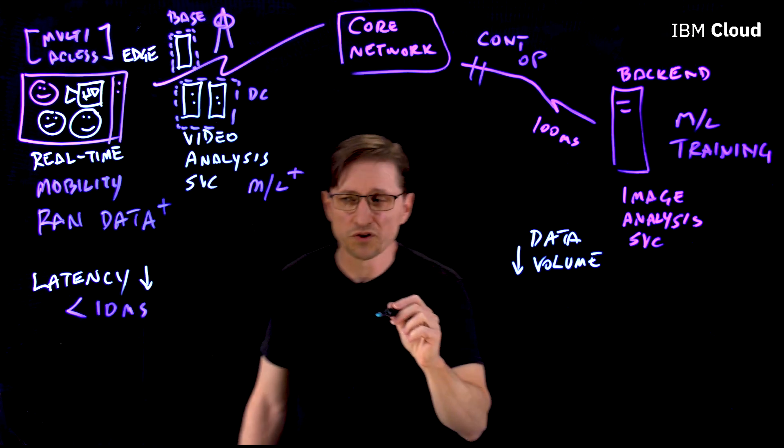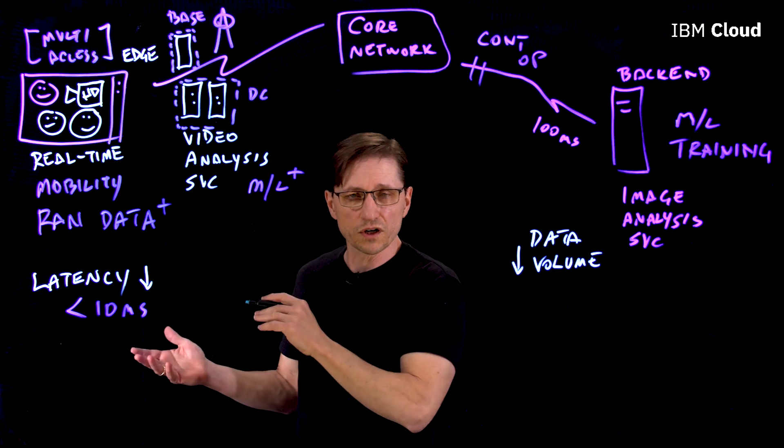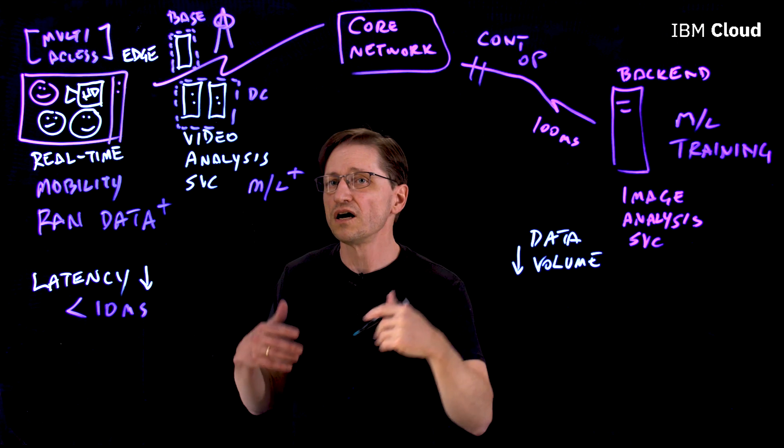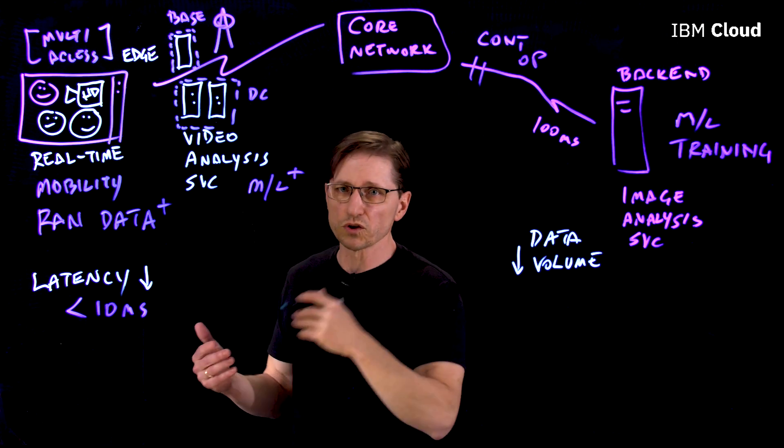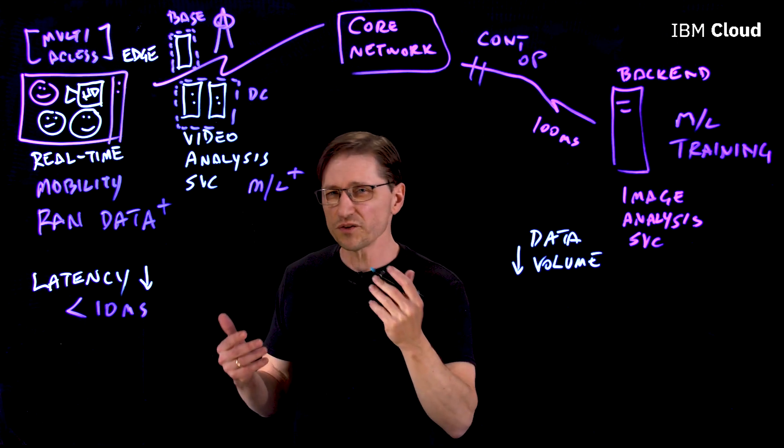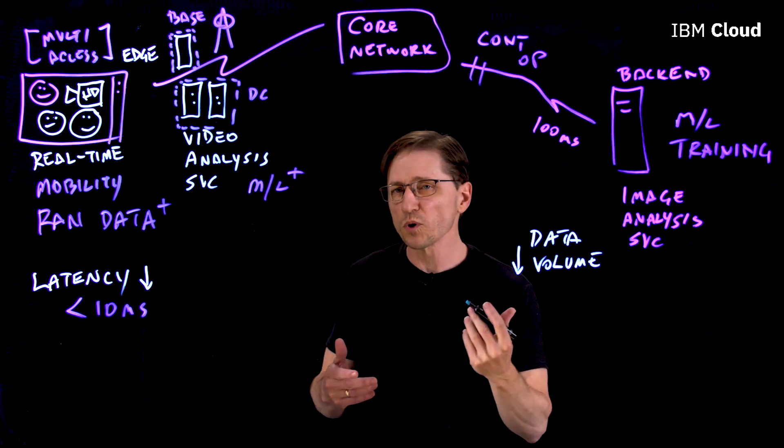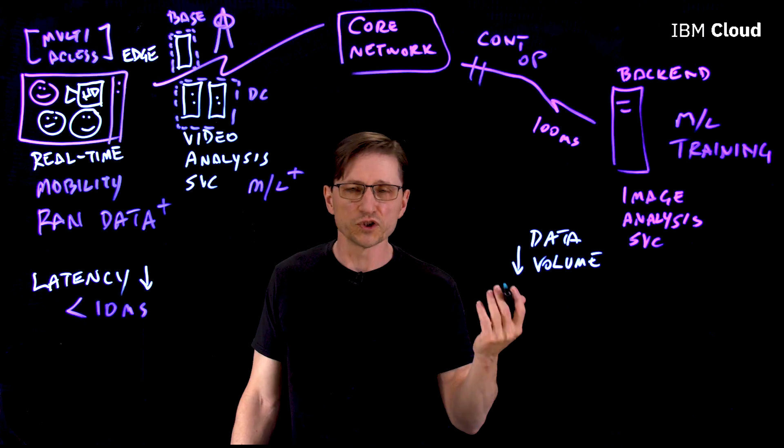For example, the radio access network would know where the location of the users are and could potentially predict where additional load would be required. This allows the network to be much more responsive to users' needs and be able to deploy capacity where it's going to be needed in the future.